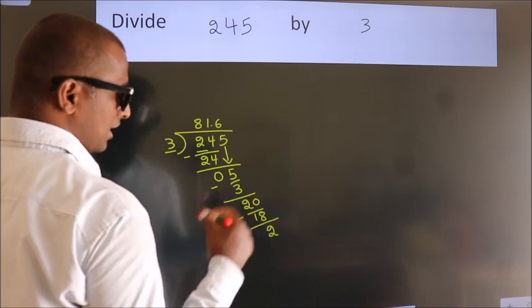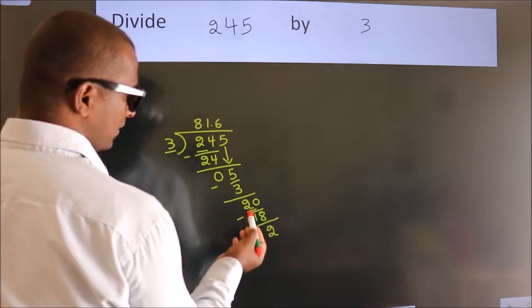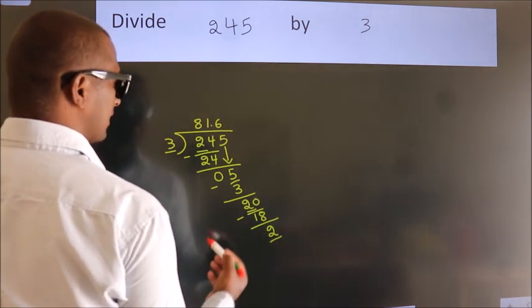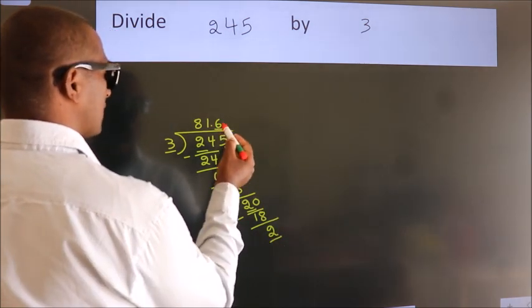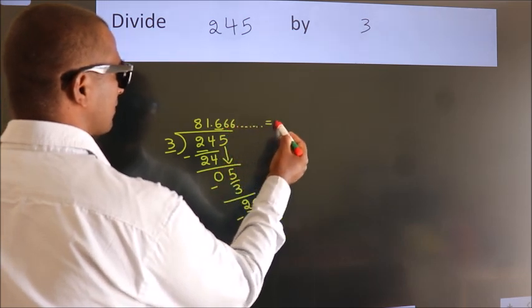Now you observe. We had 1 here. We had 2 here, and we got 2 again. That means this number keeps on repeating. So this is our quotient.